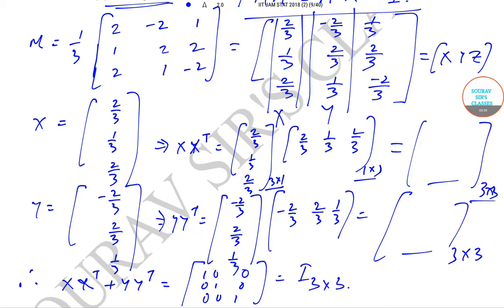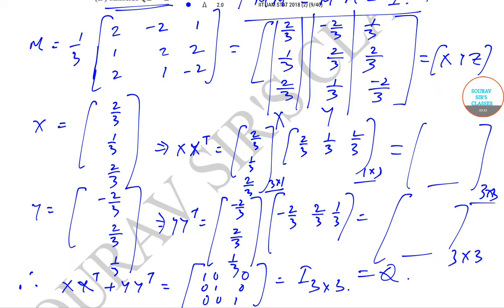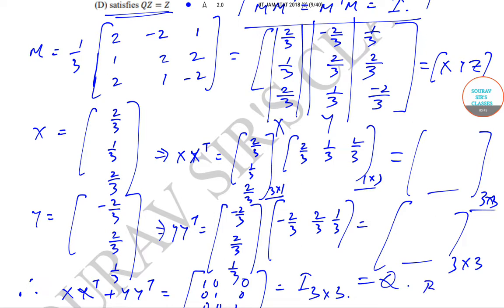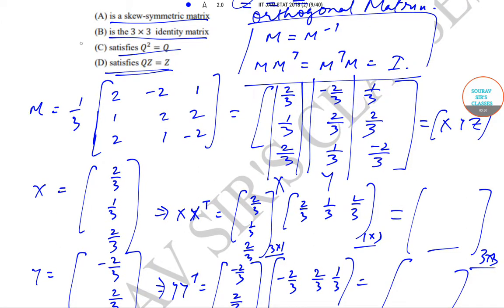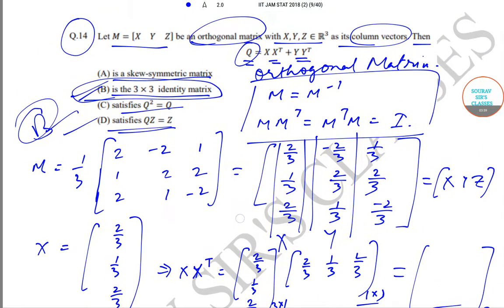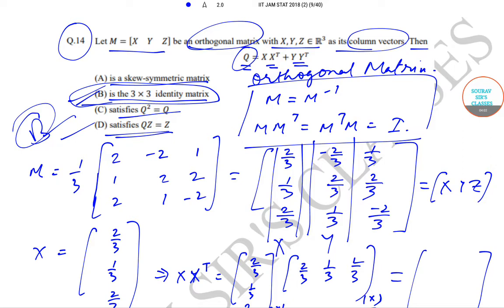This is equal to Q, so option B is correct — Q is the 3×3 identity matrix. Today we have solved question number 14 from the IIT JAM Mathematical Statistics question paper of year 2018. We will be solving the next questions in subsequent videos. Till then, keep watching Services Classes videos for more solutions and content. Thank you very much.